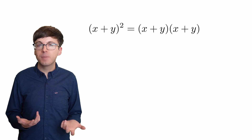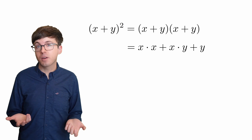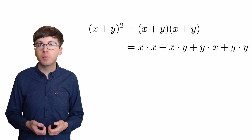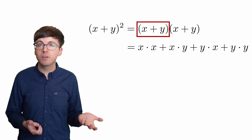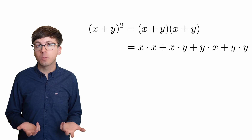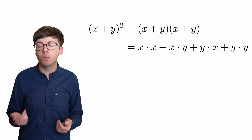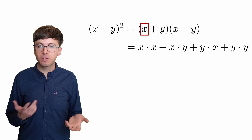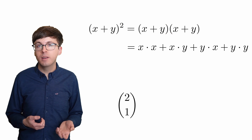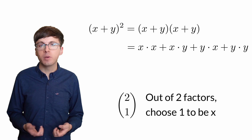So why does this work? Let's look at (x + y) squared. When we multiply this out, we have x times x, x times y, y times x, and y times y. This is all the different ways to pick either x or y from the first factor, and x or y from the second factor. If we're interested in how many xy terms we're going to have, we can think about how many ways there are to pick one x and one y. Well, there are two ways: xy and yx. So we can write this number as 2 choose 1, since out of two possible factors, we're choosing one to be the x, and the other will be y.